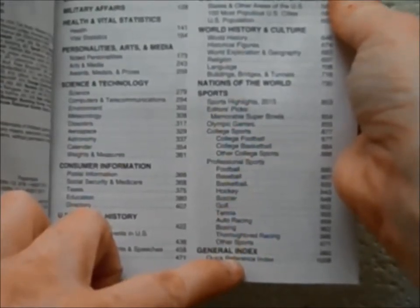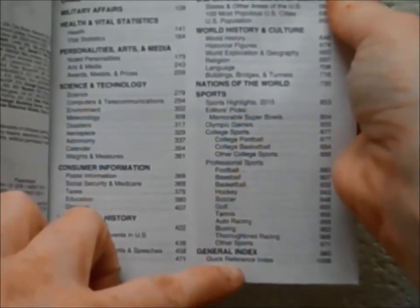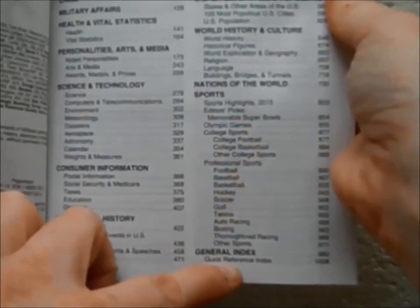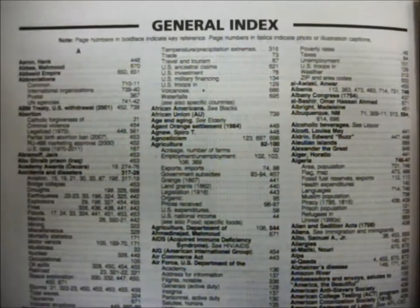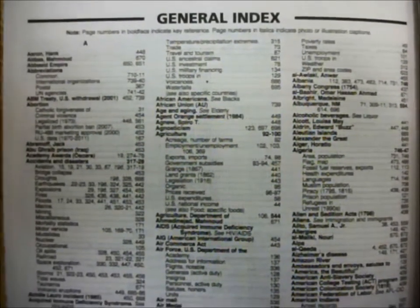At the bottom of the table of contents we find the page numbers for the general index and the quick reference index. The general index is the most detailed. It is towards the back of the book, has many pages, and is in alphabetical order. The general index starts with the letter A, and has many headings and subheadings.